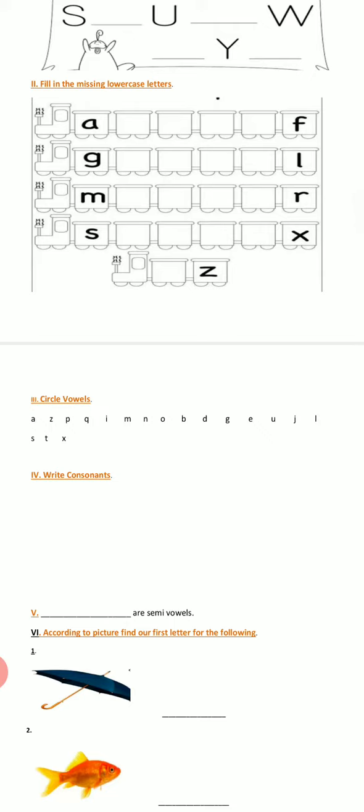Third task: circle ovals. How many ovals are there? We have learnt about these before. So here some letters are given, and in those letters you have to circle the ovals.